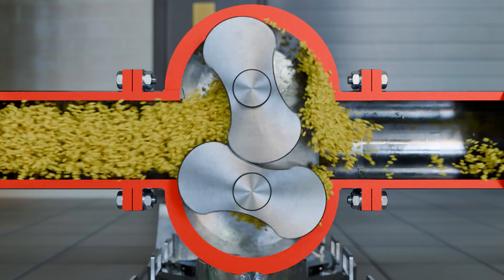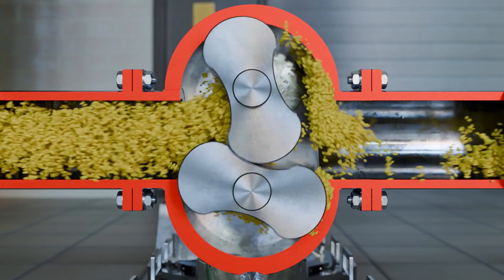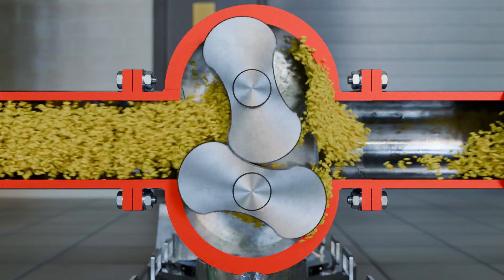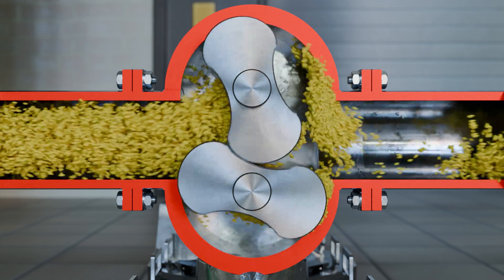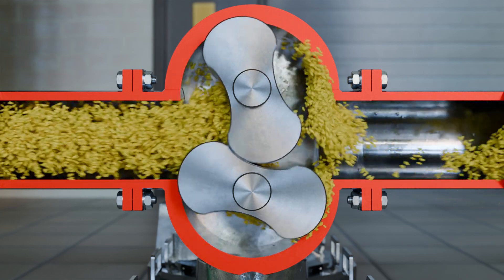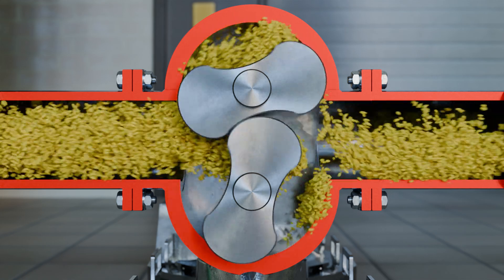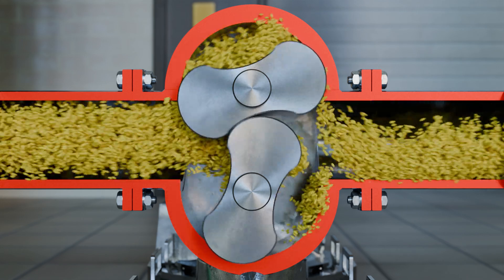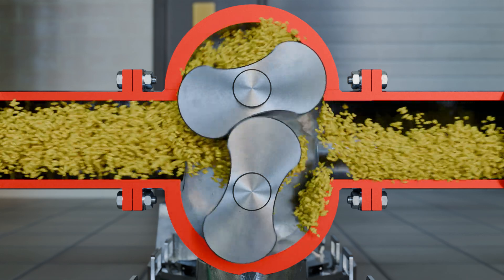Lobe pumps are also used in vacuum technology to pump air or gases from a closed system. Lobe pumps are also used as compressors for supercharging combustion engines. This will be discussed in more detail later. Rotary lobe pumps are characterized by high reliability, low vibration and noise levels. They also require little maintenance.